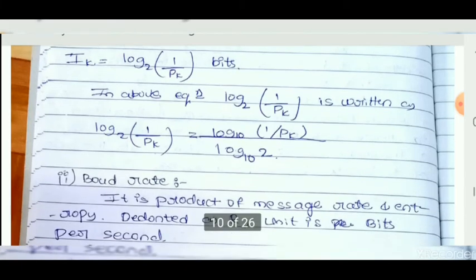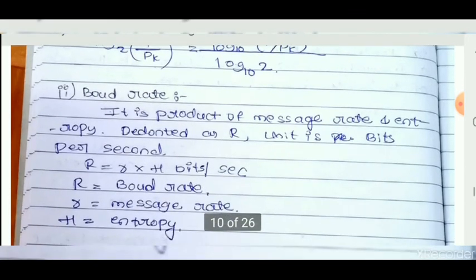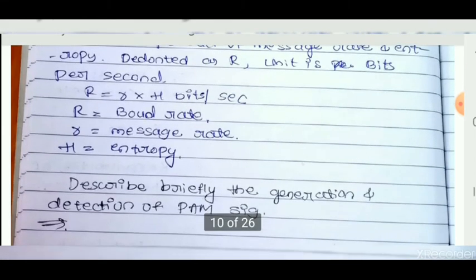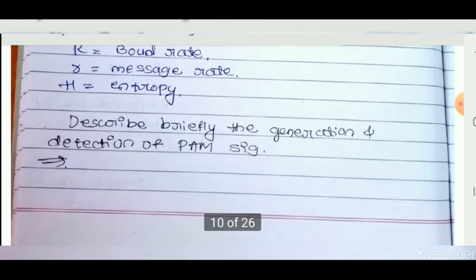Baud rate is the product of message rate and entropy, denoted as R with units of bits per second. R equals small r into H, where R is Baud rate, small r is message rate, and H is entropy.